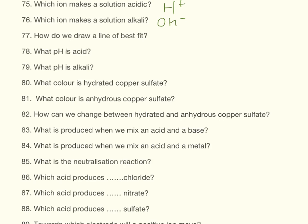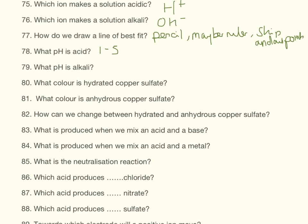How do we draw a line of best fit? You're going to need to use a pencil, maybe a ruler unless it's a curve, and we need to skip the anomalous points. What pH is acid? That's going to be low pH, something around 1 to about 5. And then alkali, we're talking maybe like 8 up to 14.